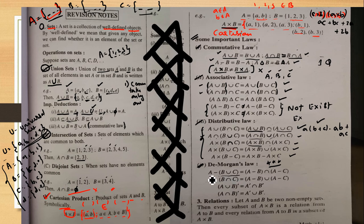De Morgan's Law — three-star rating. First form: A minus (B union C). Distribute the answer. A minus B — one part. A minus C — another part. But the operator changes — A minus (B union C) equals (A minus B) intersection (A minus C).